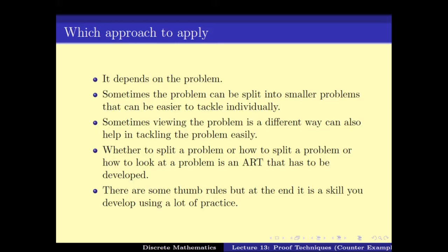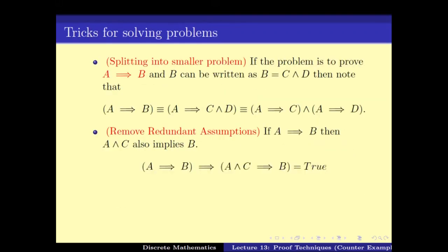We also looked at some simple techniques for how to split the problem into smaller cases. First, if B can be written as C and D, then proving A implies B is the same as proving A implies C and A implies D. One can split the problem of proving A implies B into these two parts. There is also the technique of removing redundant assumptions — sometimes some assumptions are there which are not necessary. If asked to prove A and C implies B, one might throw away C and end up proving A implies B, which is good enough.